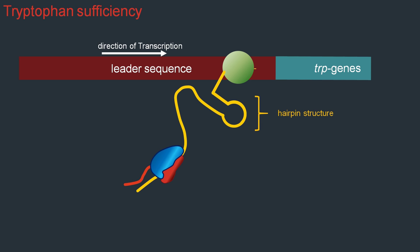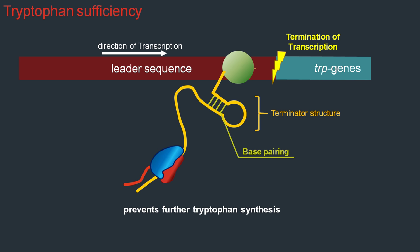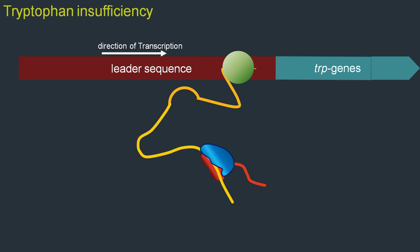The terminator structure forms because some parts of the attenuator RNA can bind each other. Since the ribosome cannot pass this structure to continue translation, and with translation stopped, transcription is also terminated. This means that under high levels of tryptophan, the leader sequence is transcribed and even translated, but due to termination of transcription, none of the downstream tryptophan genes are transcribed — preventing tryptophan production when it's already abundant.